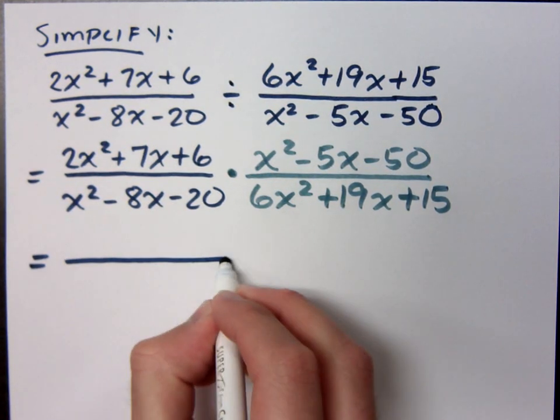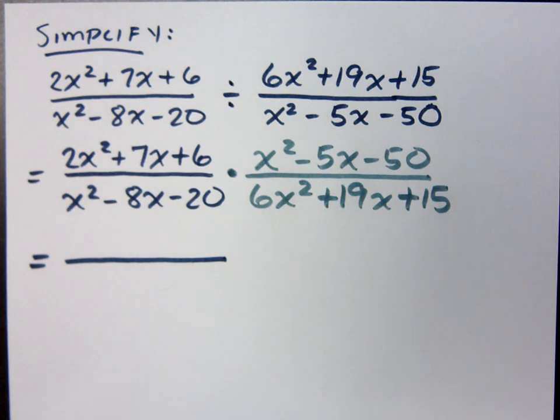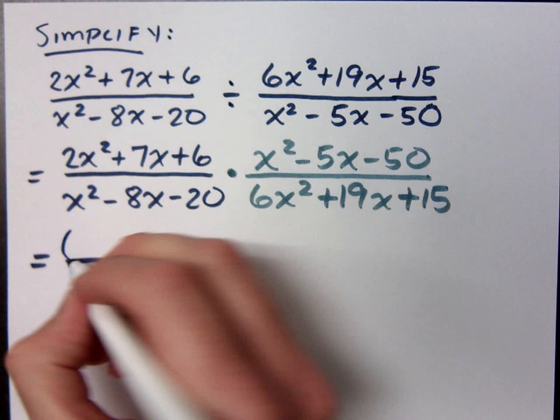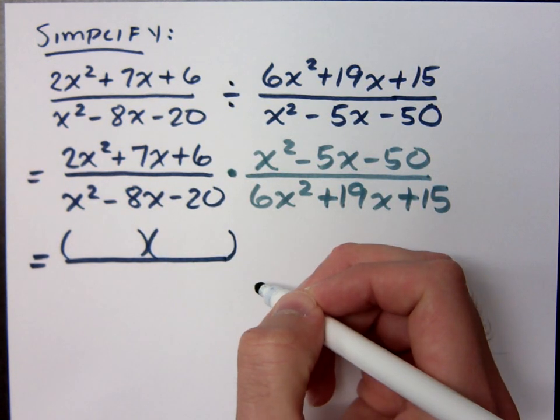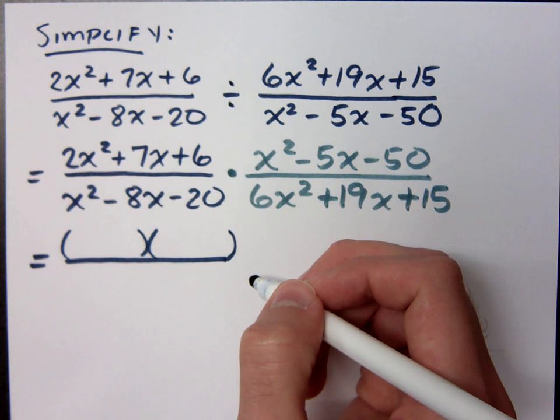So now that we have this written as multiplication, we factor everything. You always look for your greatest common factor first. I don't really see one here for this numerator. And then you're going to notice and recognize that this is a trinomial. So we break this down just like we did the other day.